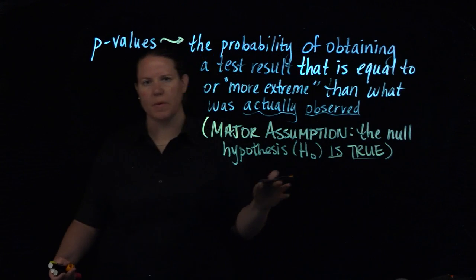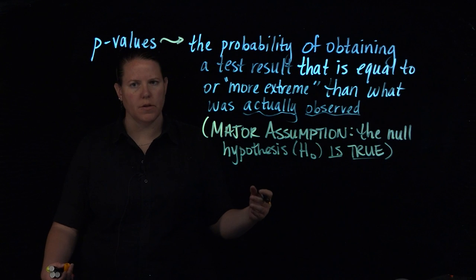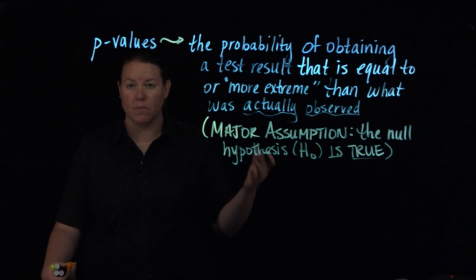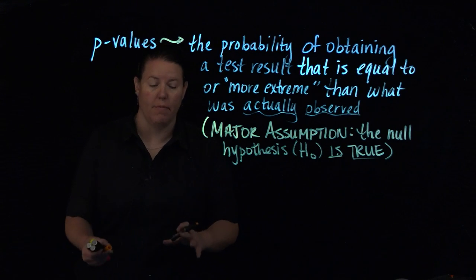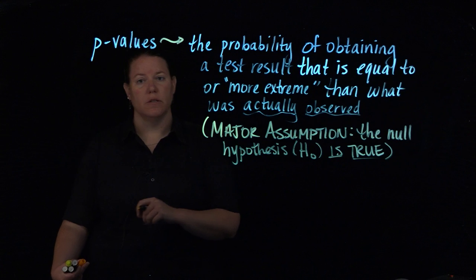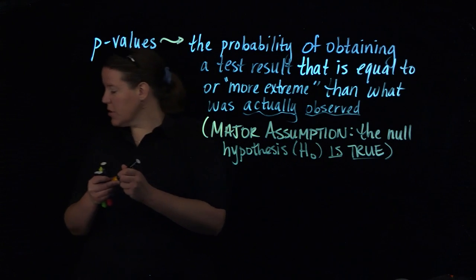You are not assuming that the alternative hypothesis, or the hypothesis that is what you want to have happen, is true. We are assuming that the opposite, the null, is actually true.